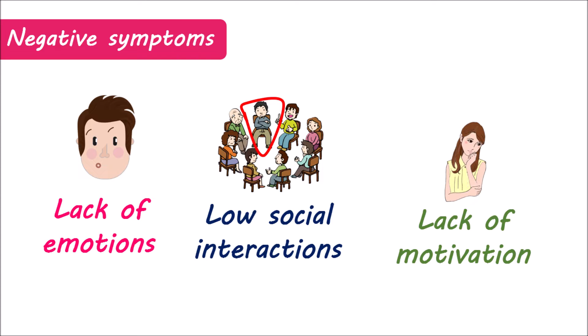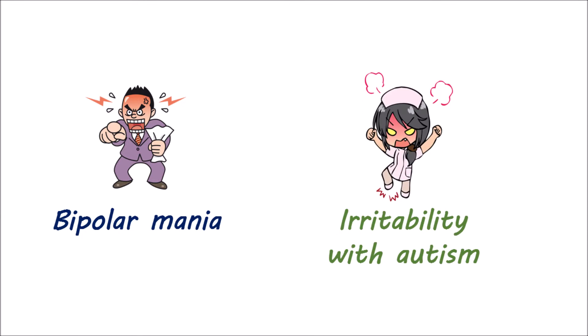The second clinical use of risperidone is in the treatment of bipolar mania, where it can control hyperactivity and mood swings. Risperidone can also be used in children with autism to control irritability, self-harm, inattention, and hyperactivity.